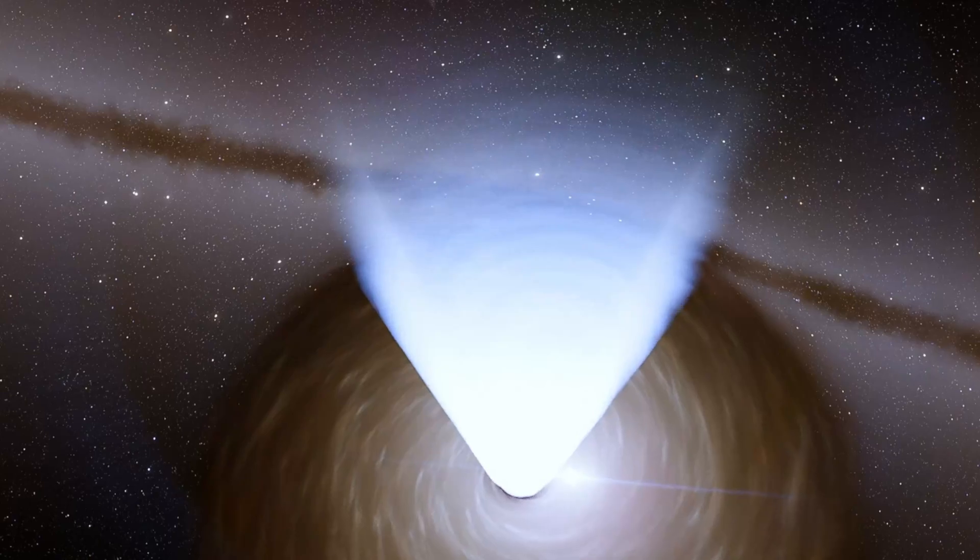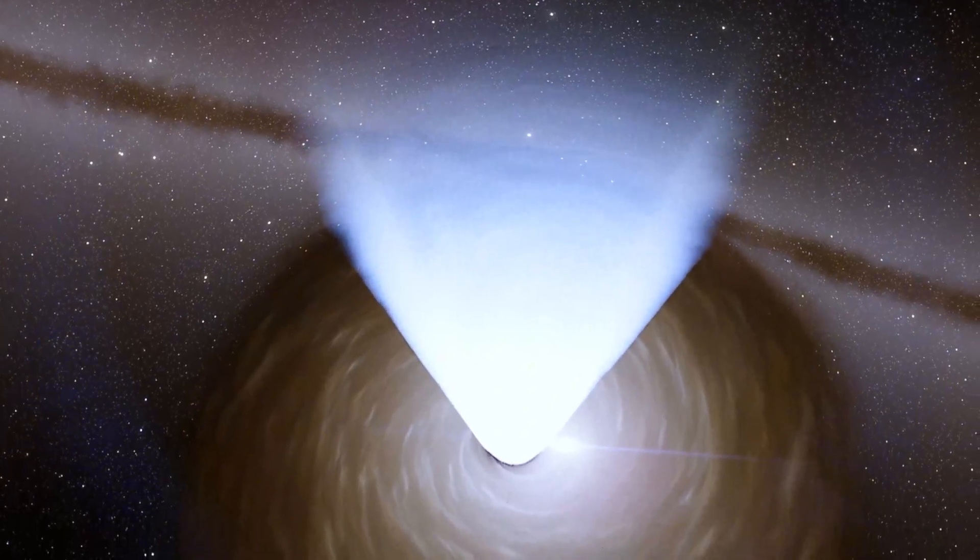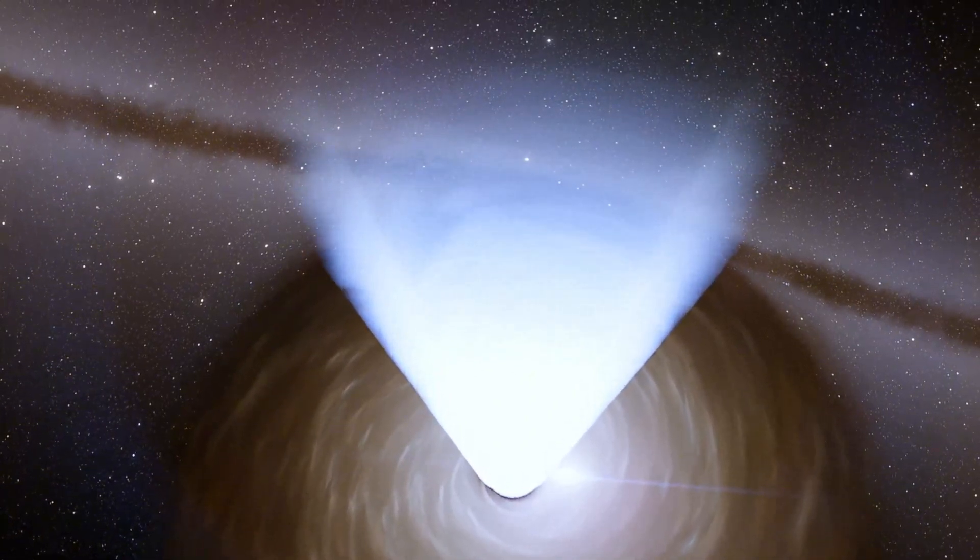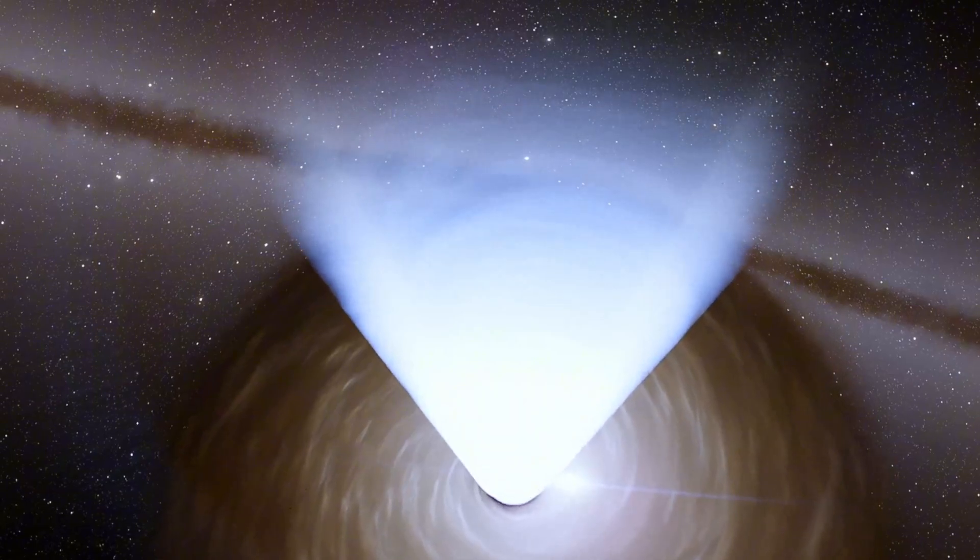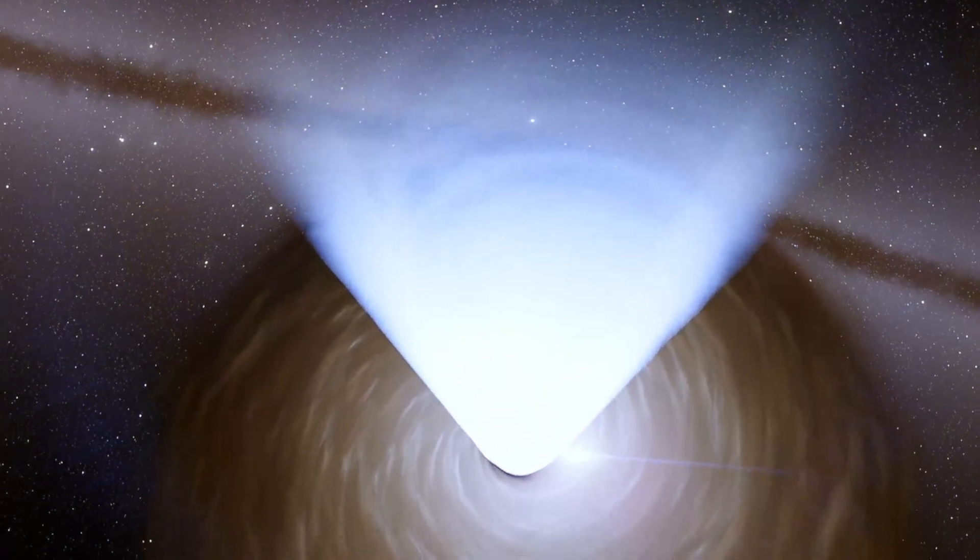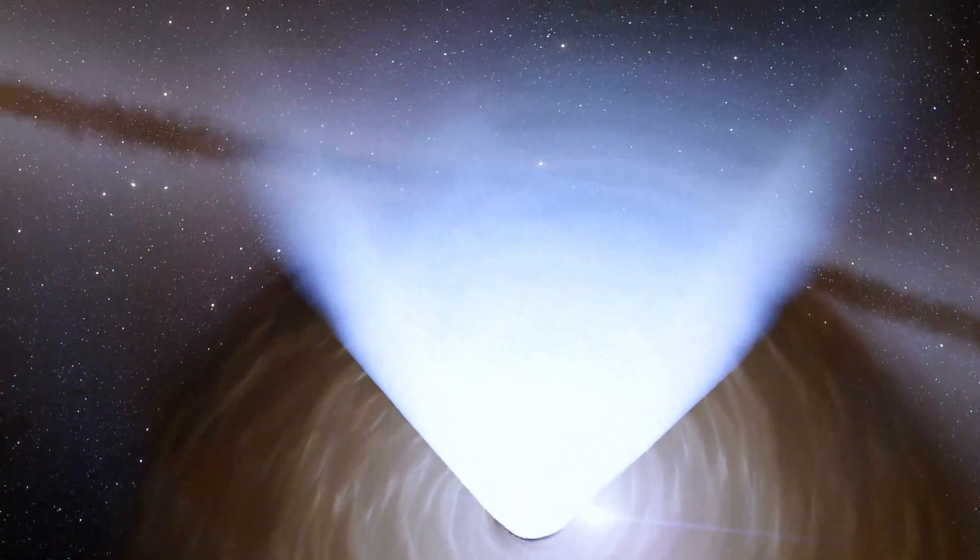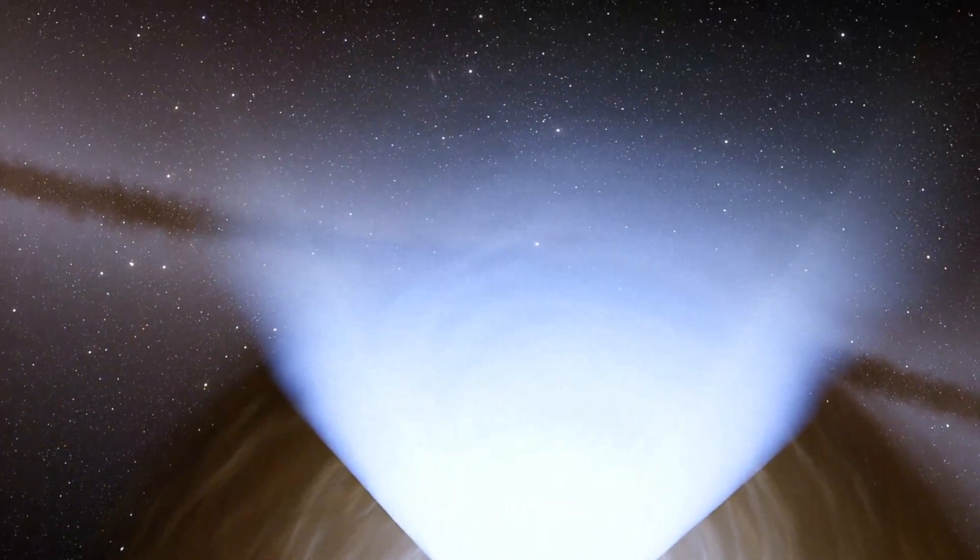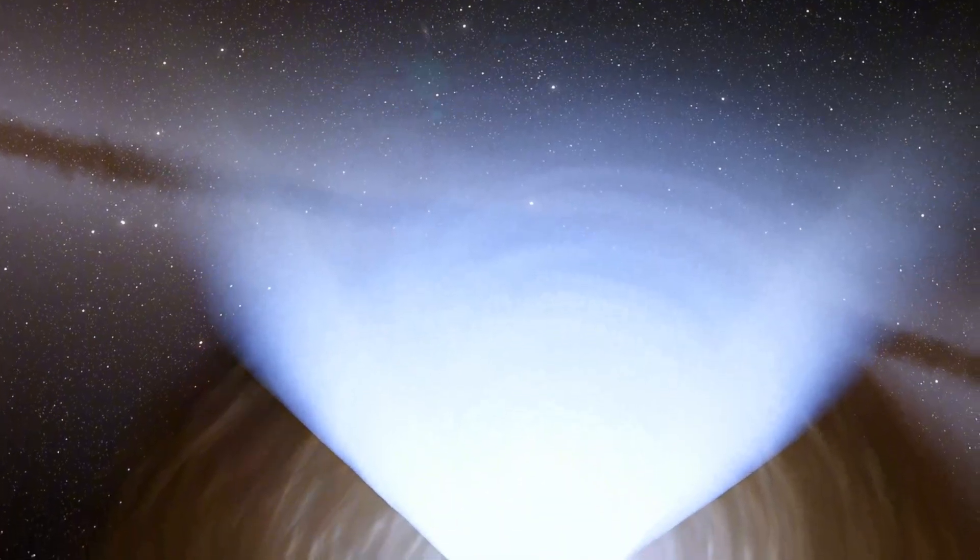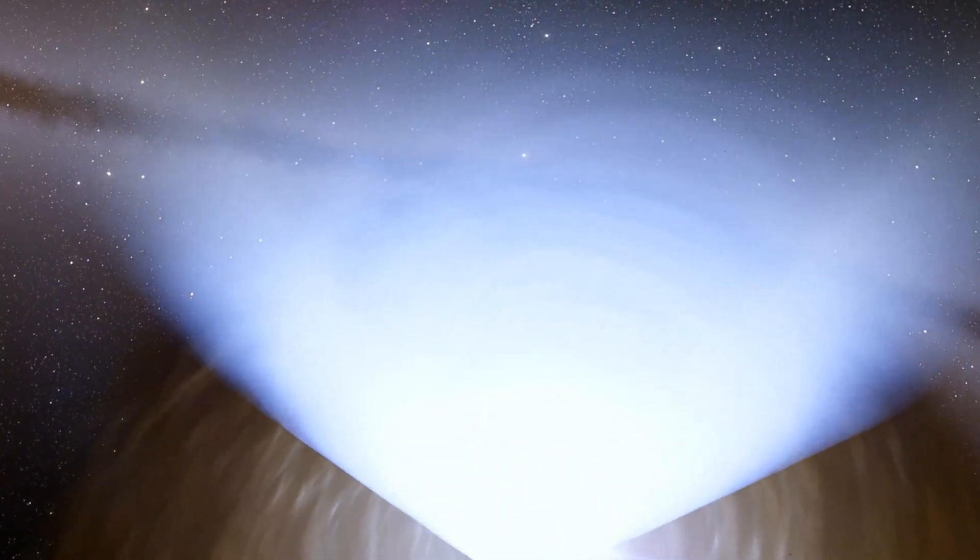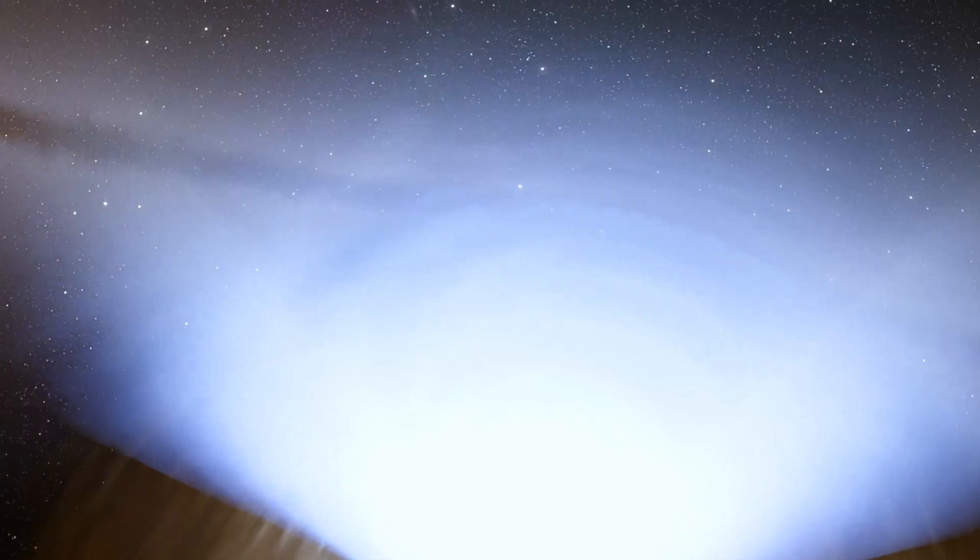Light from distant stars bends around the black hole, creating this surreal halo. It's a phenomenon known as gravitational lensing, a testament to the immense warping of space-time in this region.